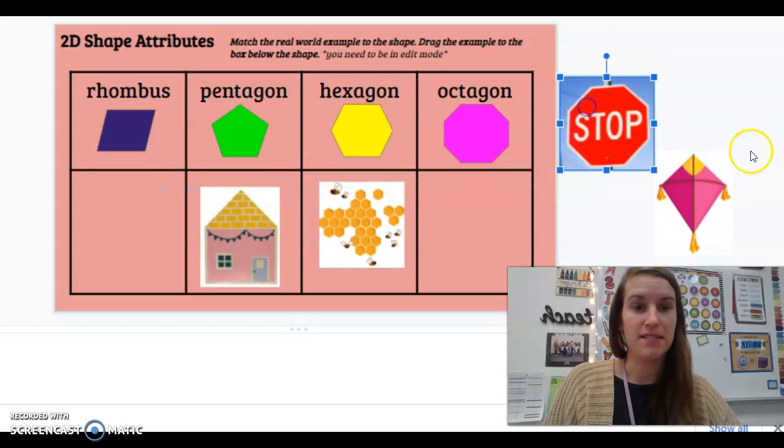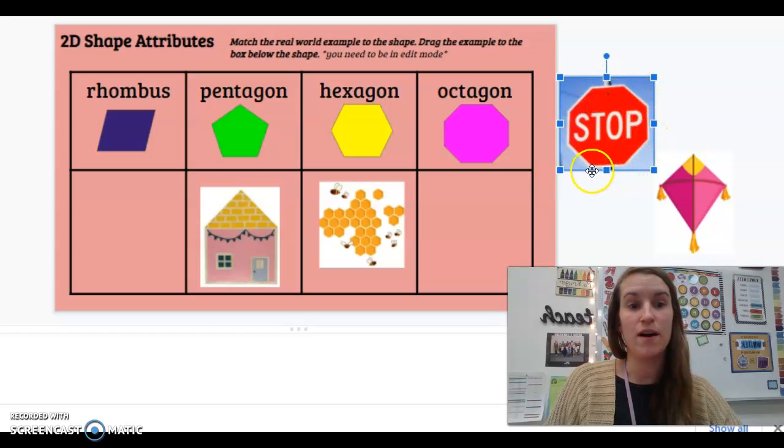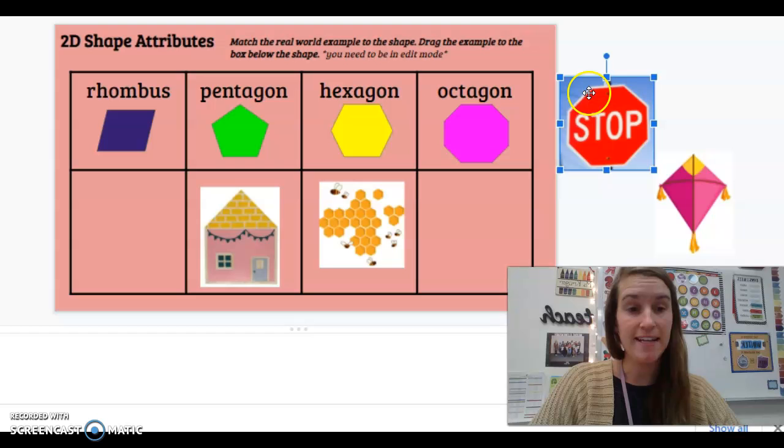Our stop sign. Let's see how many sides our stop sign has. One, two, three, four, five, seven, eight. Eight sides, octagon. So it's an octagon.